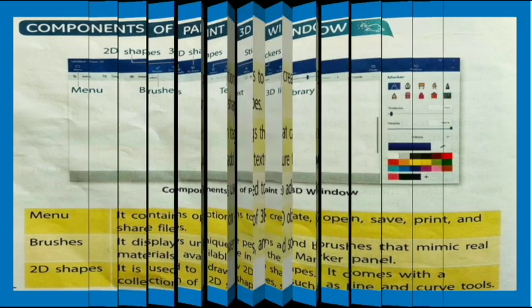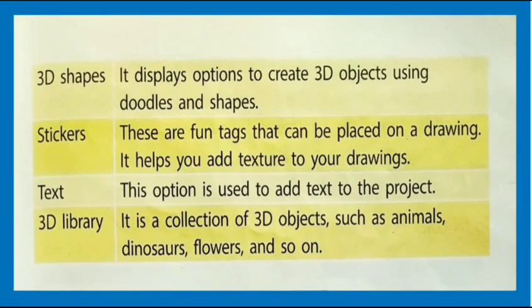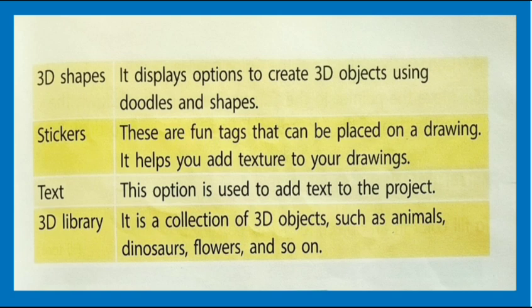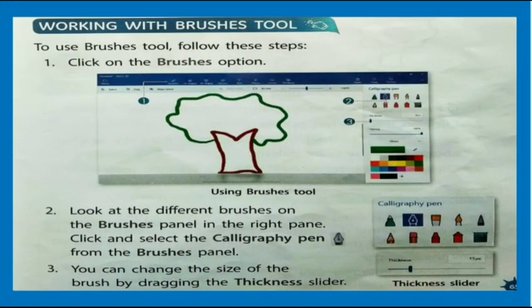3D Shapes displays options to create 3D objects using doodles and shapes. Stickers are fun tags that can be placed on a drawing to help add texture. Text is used to add text to the project. 3D Library is a collection of 3D objects such as animals, dinosaurs, flowers, and so on.